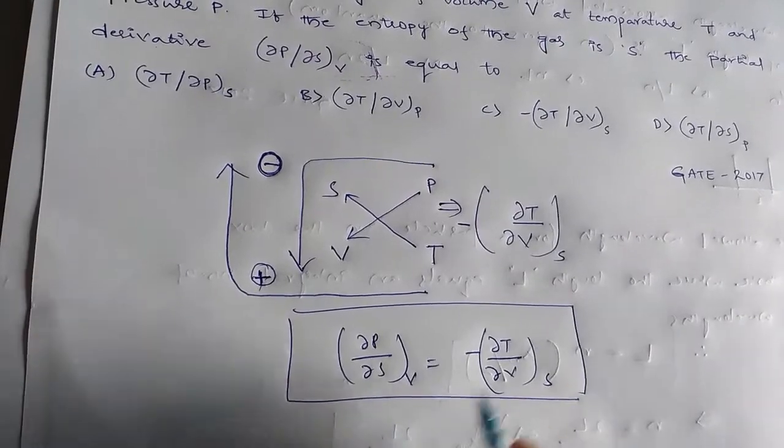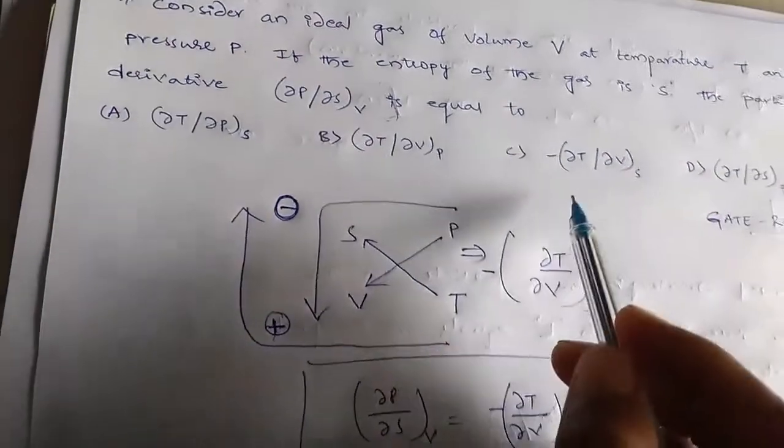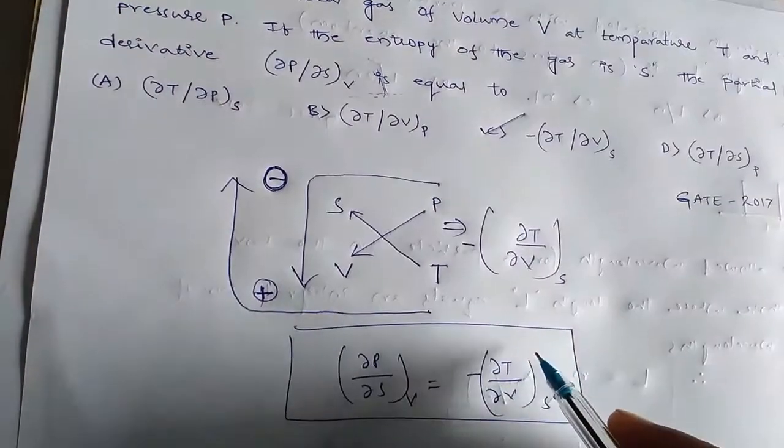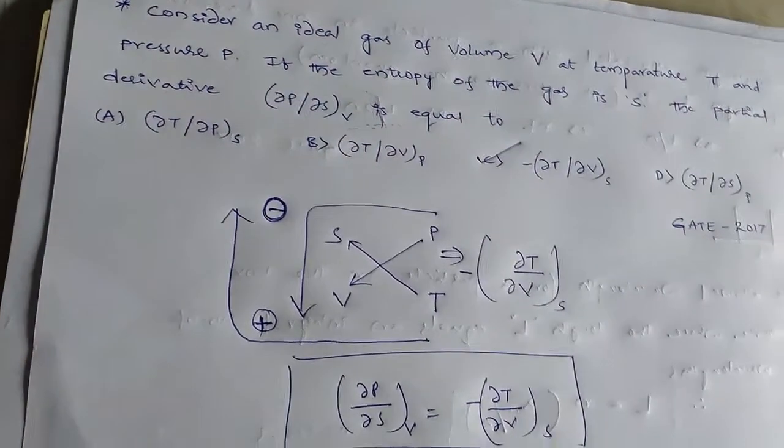So from that ∂P/∂S at constant V equals to minus ∂T/∂V at constant S. Right, so this is the relation. Check this relation in the given options. So we have it in second third C. So option C is the correct answer for the given problem.